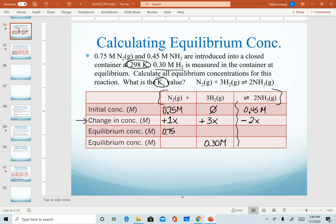So at equilibrium, we're just adding up our first two rows. For nitrogen, I have 0.75 plus x. For hydrogen, I just have 3x. For ammonia, I have 0.45 minus 2x.